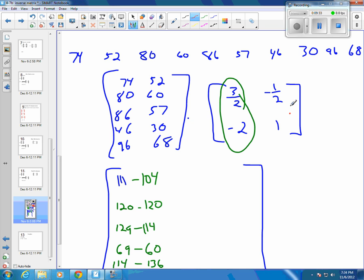Now we take our other column and multiply the same way, coming down. So half of 74, we said, was 37. And it's a negative, so negative 37. And then 1 times 52 is 52. And then half of 80 would be 40, so it's a negative 40 plus 60. And then we're going to take half of 86, which was 43, so negative 43. And then plus a 57. And then we want half of 26, which is a negative 23, plus 30. And half of 96, which was 45, 46, 47, 48, so negative 48. And then that's going to be plus 68.